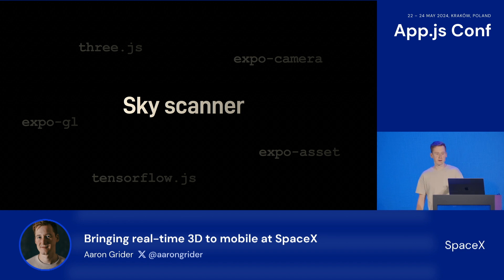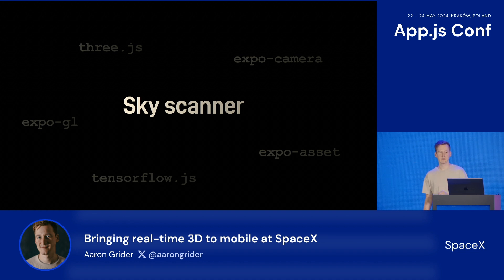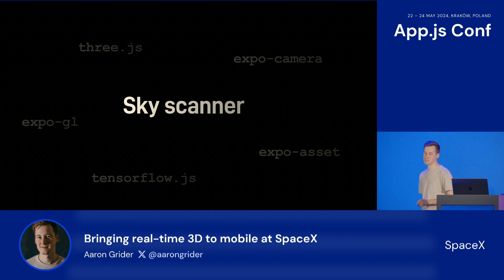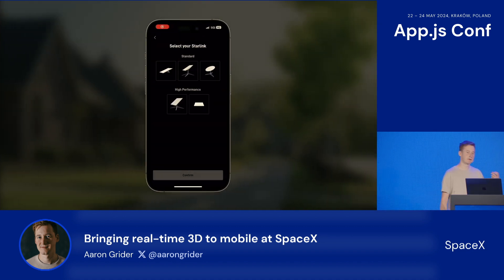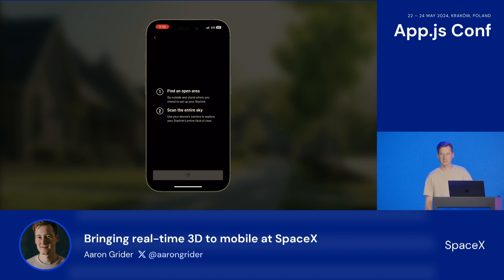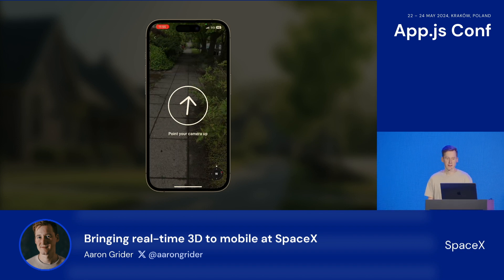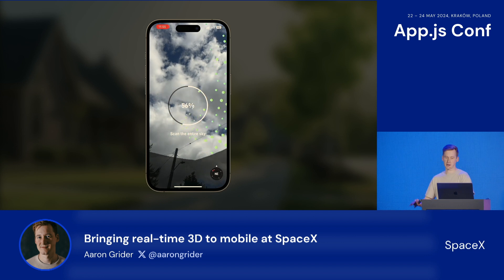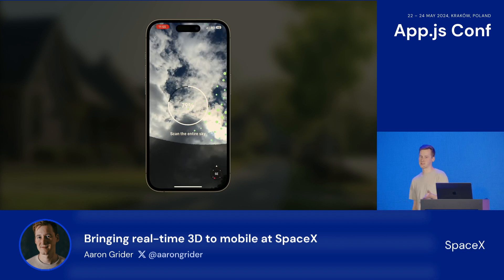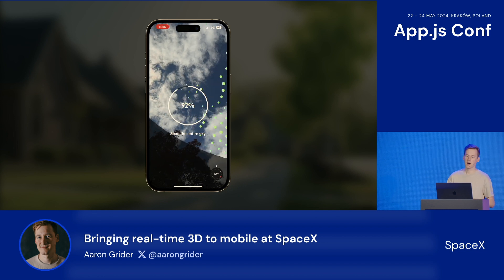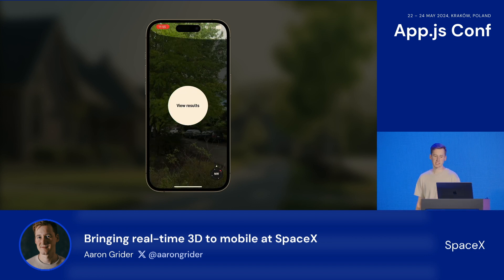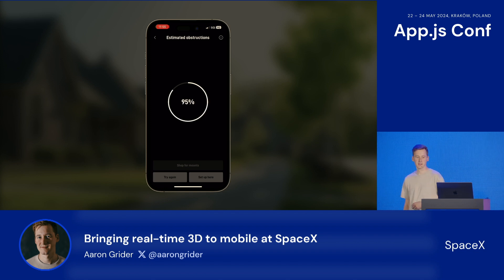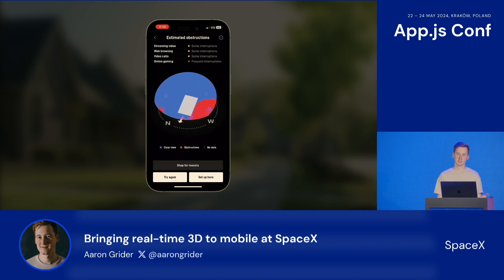With obstructions being such an important part of having a good experience with Starlink, we're using this tool to help users understand what they should expect at their chosen install location, even before they purchase the hardware. For the user, the experience is really simple — you scan the entire sky with your device's camera, and then you wait while we generate a map. That map reports locations of expected obstructions and estimates how that will affect your service. Under the hood, Skyscanner leverages advanced image recognition and 3D visualizations to make the process of scanning and viewing results more intuitive to the user.